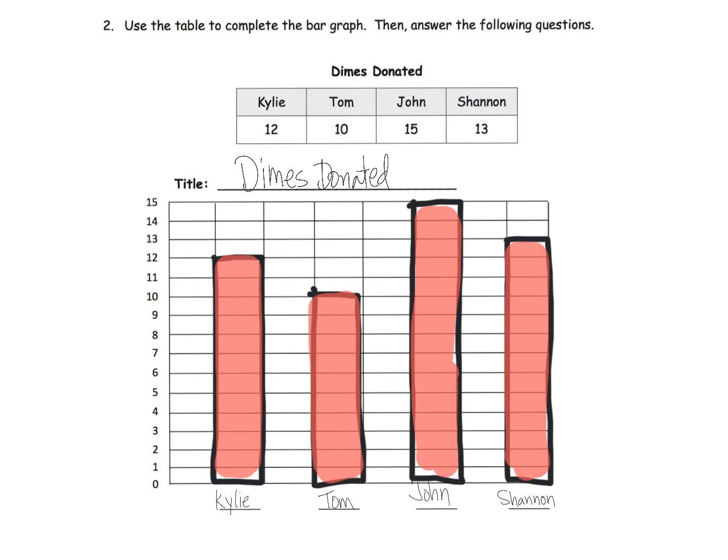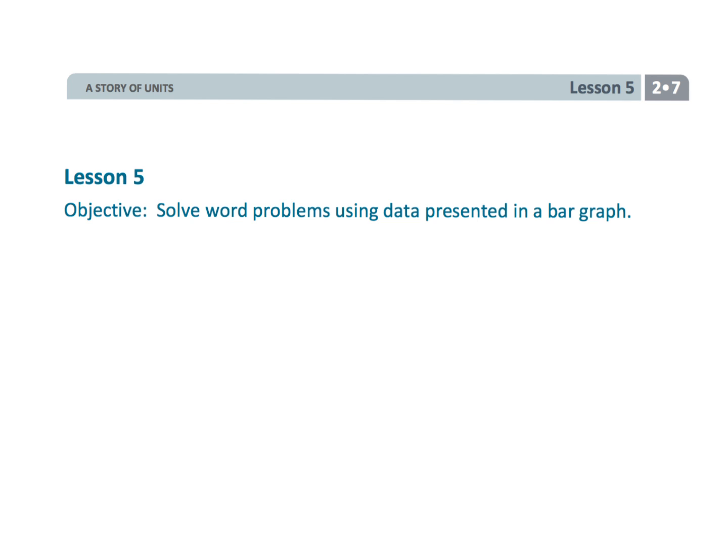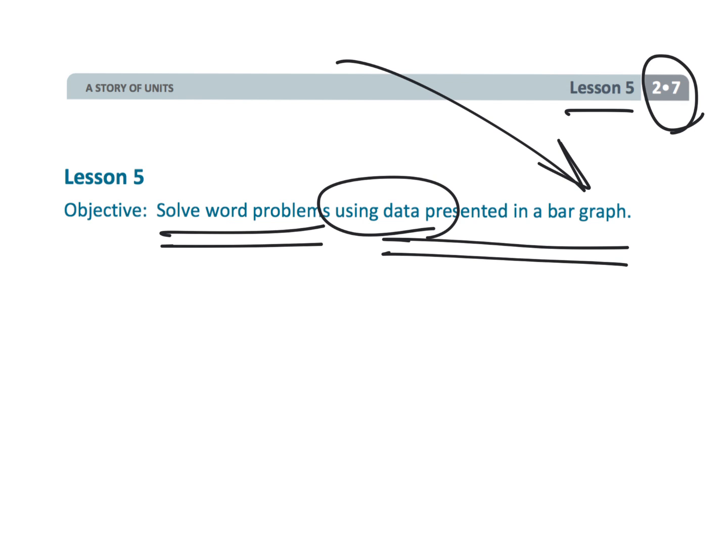And then of course once it's filled in, you can answer your questions. And that wraps up second grade module 7 lesson 5, where students are solving word problems based on the bar graph that they've created with the data they have been given.